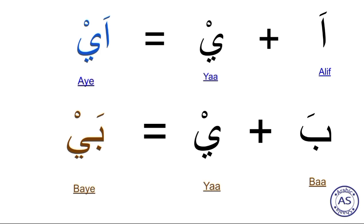First letter has vowel sign — Fatha. Second letter is Ya, which has sign Sukoon. Yes. Now we have merged the first letter into the second letter. So what will be the pronunciation? 'I'. Second letter is Ba — 'Ba'. So the merged pronunciation is 'I' + 'Ba'.